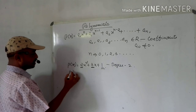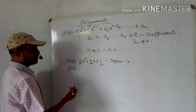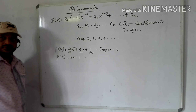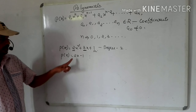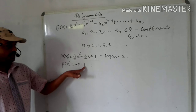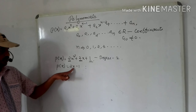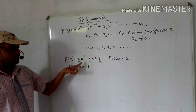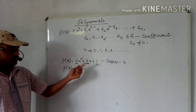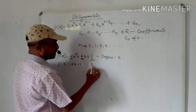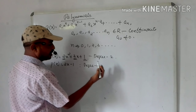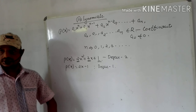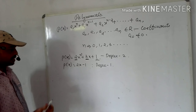Similarly, p(x) = 2x − 1 is a polynomial. The coefficients 2 and −1 are real numbers and the power of x is 1, so this is a polynomial of degree 1.